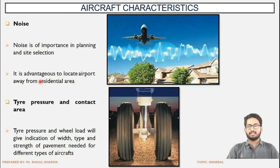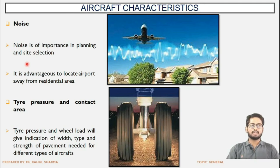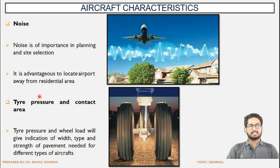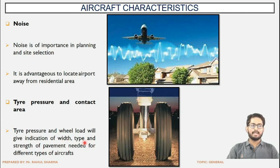Next are noise and tire pressure. Noise is of importance in planning and site selection — we need to ensure that residential areas are not a nuisance in the vicinity of the airport; there should be a certain clearance between the airport site and the residential area. Tire pressure will give an indication of the width, type, and strength of the pavement needed for different types of aircraft — what pressure is exerted by the tire on the pavement affects what pavement type and structural strength must be provided.